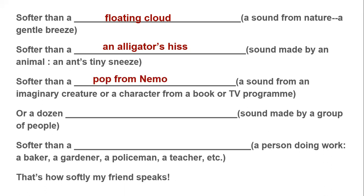Softer than a pop from Nemo — who's Nemo? Nemo is a young clownfish in Finding Nemo. A pop is a sound that fish normally make. Fish make different types of sounds, and pop is one of them. So softer than a pop from Nemo — a tiny little fish. If you had a tiny fish in your aquarium and tried to listen to the sounds it makes, you would not hear anything, though they do make sounds.